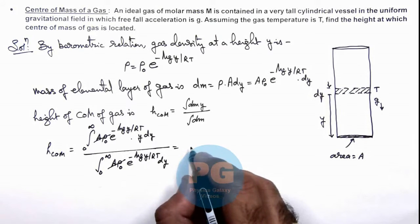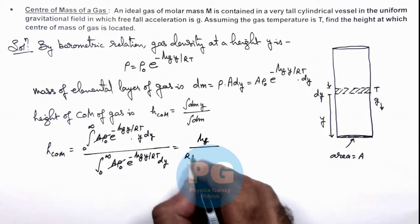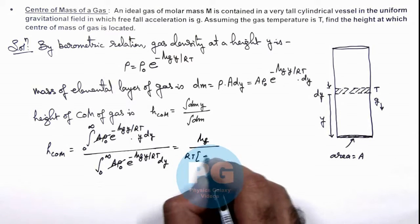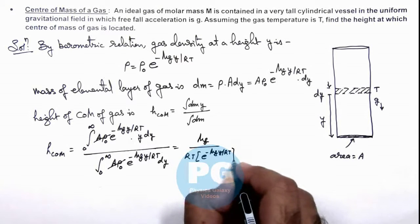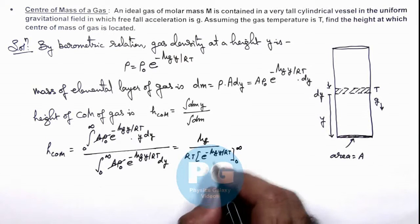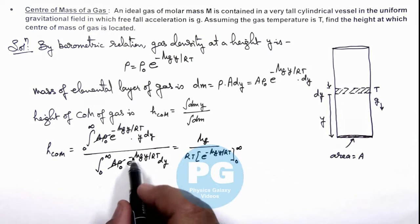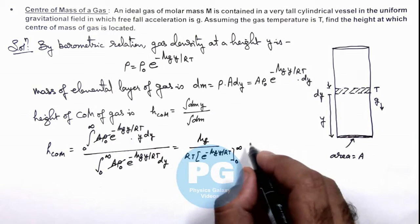So this in denominator will be given by Mg/RT and this is e^(-Mgy/RT), and limits we can substitute from zero to infinity. This minus I am ignoring because in numerator also this will change.